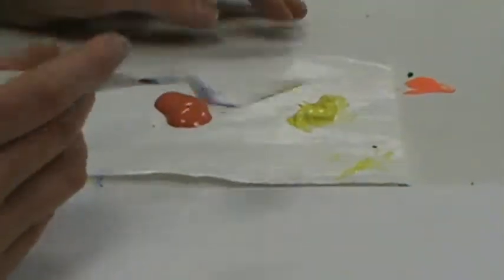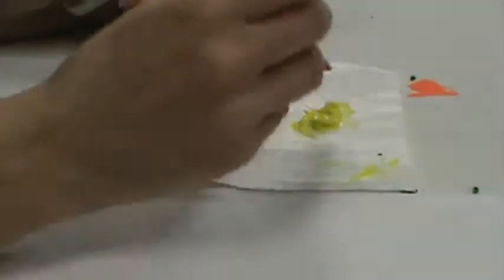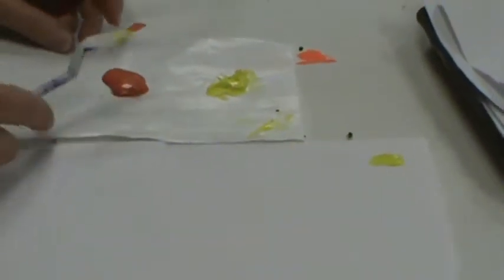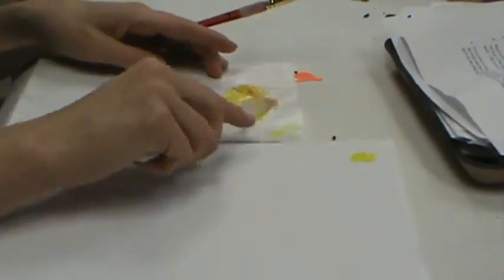So what you're going to want to do is mix your dark into your light just like this. Step one is going to be the light color. Step two, you just touch your dark color, mix it into your light color, and then you've got the next step.